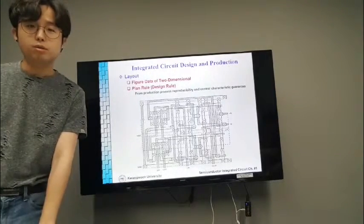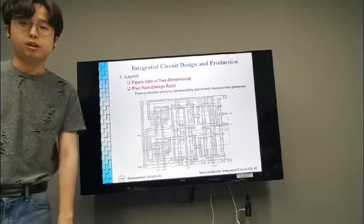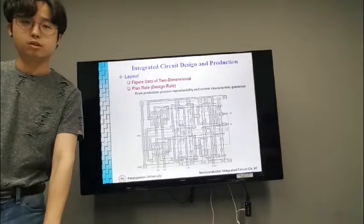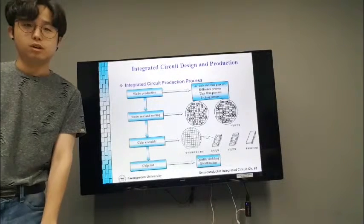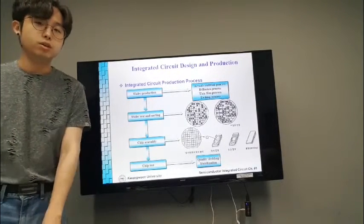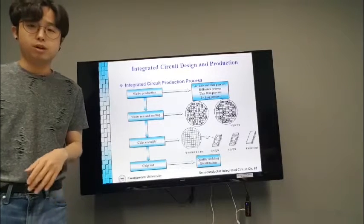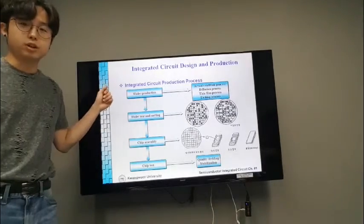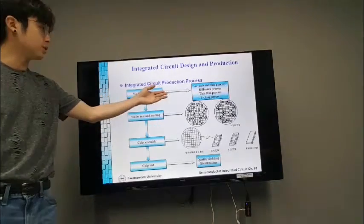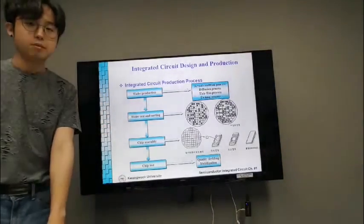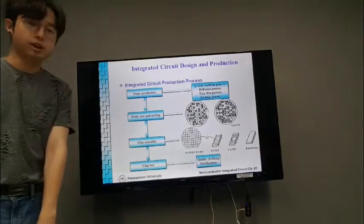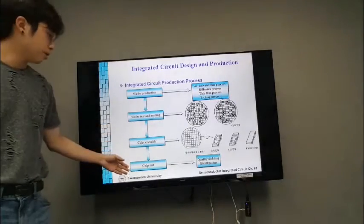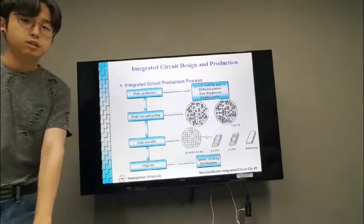And we have to draw a layout figure data of two-dimensional based on the design look. Based on the integrated circuit plans I mentioned before, we go into production process. First, wafer production. It consists of four processes like that. And next, wafer test and sorting. Third, chip assembly and test. And finally, quality device stabilization.